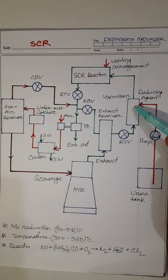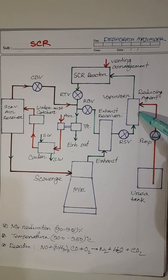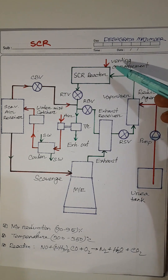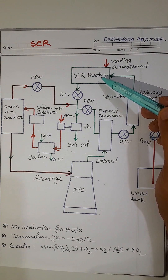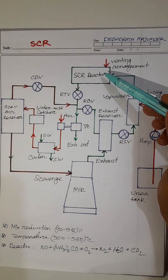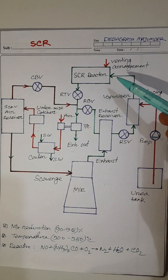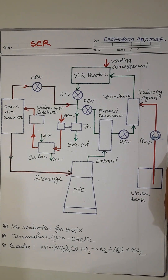As the reducing agent is also mixed with the exhaust gas in this chamber, that's why this chamber is also called mixer. That means it is vaporizer or mixer. Here you can see the SCR reactor unit where this catalytic reactor is fitted. Normally the catalytic elements are made of titanium or aluminum oxides.